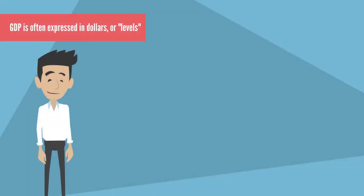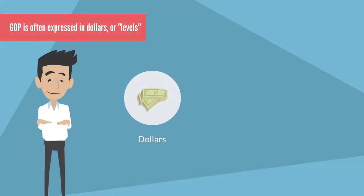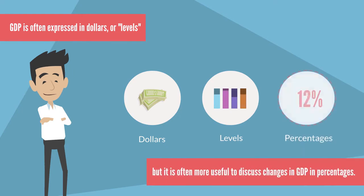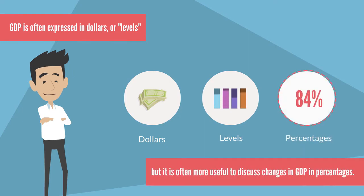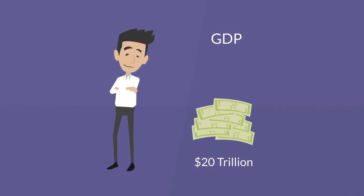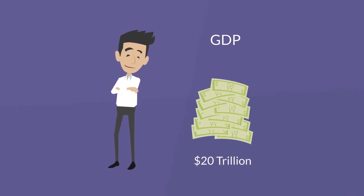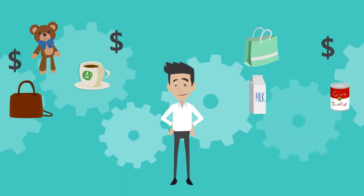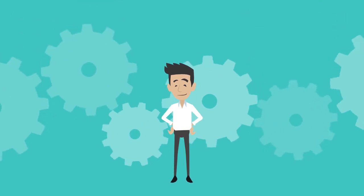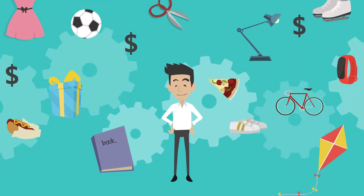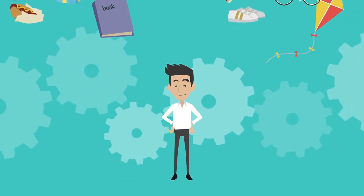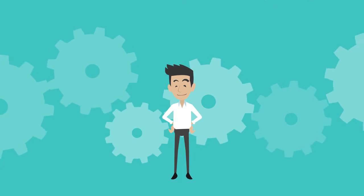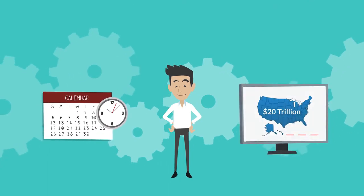GDP is often expressed in dollars or levels, but it is often more useful to discuss changes in GDP in percentages. For example, let's say GDP is 20 trillion dollars, meaning that the total market value, expressed in dollars, of all final goods and services produced in an economy in a given year is 20 trillion dollars.